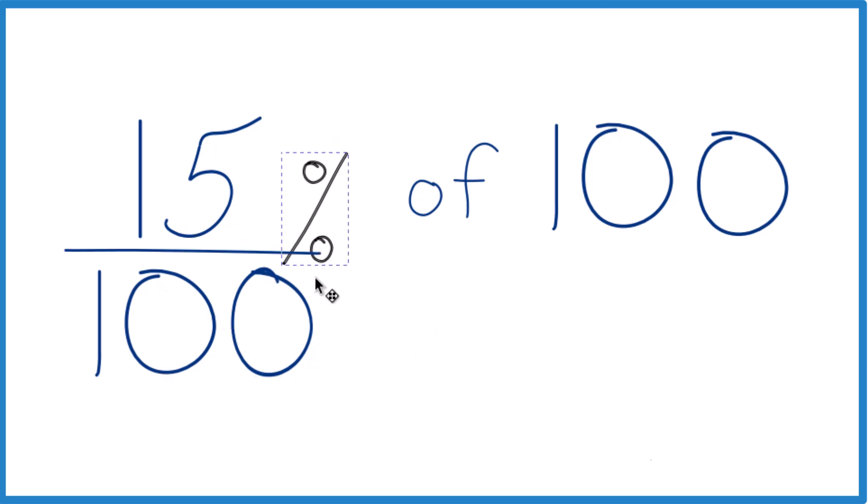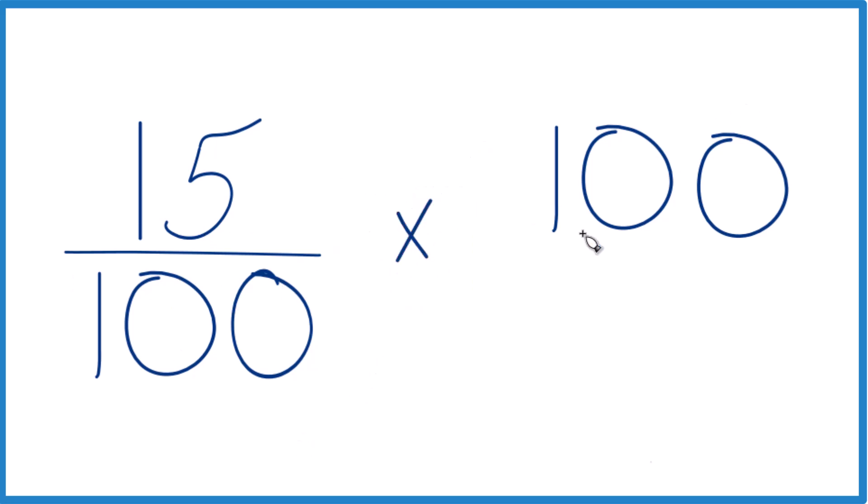The other way you can do this is you can call it 15 over 100. Instead of of, what we're going to do is multiply by 100. We're going to call it 100 over 1. That way everything lines up when we do our multiplication.